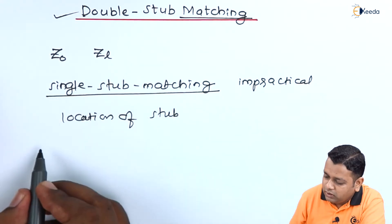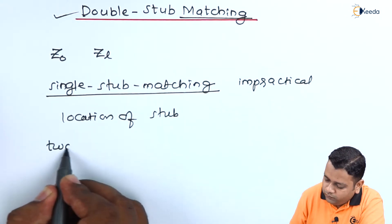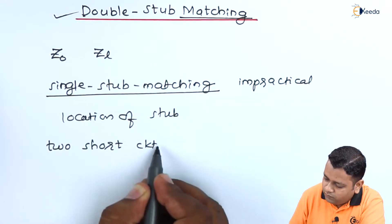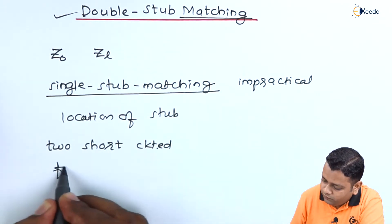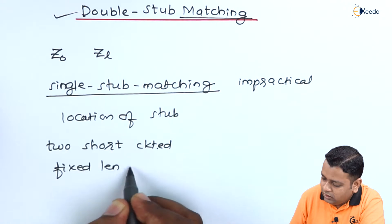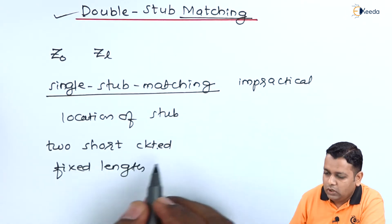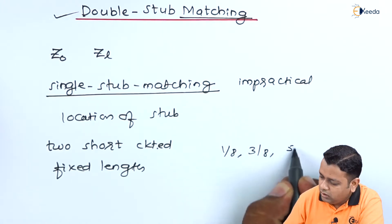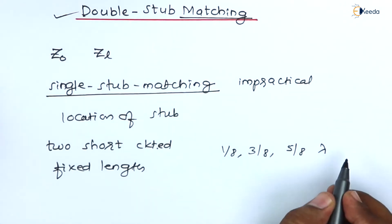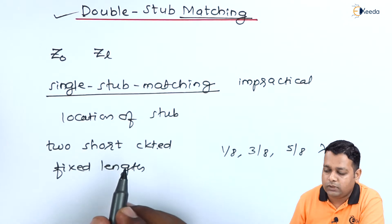That is why the method will be shifted to the double-stub matching form here. When we have the double-stub matching, the devices will be consisted of the two short-circuited stubs here. This will be of equal and fixed length. Now usually the length of these two stubs will be of either one-eighth or three-eighths or five-eighths of the wavelength represented by lambda.